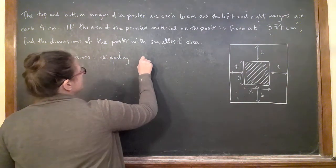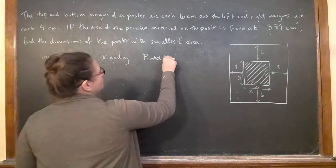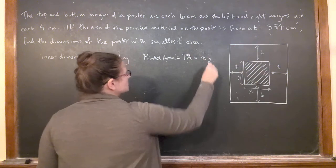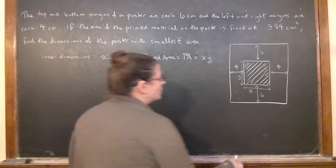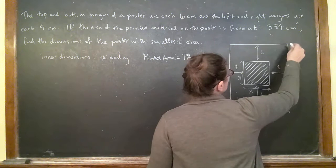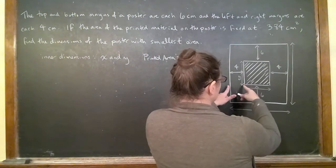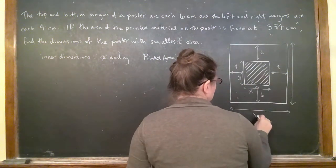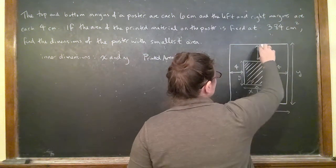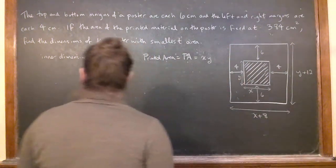The printed area, we'll call it PA, is going to be x times y. If you look at the outer dimensions of my big poster, the total area: this is x and then I have two pieces of 4 on each side, so this would be x plus 8. And this is y and then I would have two pieces of 6 on each side, so this would be y plus 12.